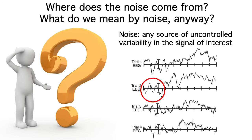But what about these alpha oscillations? They reflect real brain activity and they can be used to study things like attention and mind wandering. So aren't these oscillations a signal rather than a source of noise? Well, one researcher's signal can be another researcher's noise. The key is whether it creates uncontrolled variability in the signal of interest. If we're trying to study the processing of the stimulus, we typically have no control over the alpha band oscillations, and they create uncontrolled variability in the stimulus-locked ERP waveform. That's noise.